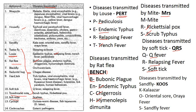Diseases transmitted by sandfly are remembered with KOOS: K = Kala-azar, O = Oriental sore, O = Oroya fever, S = Sandfly fever. For the tsetse fly (CC fly), the 'C' stands for sleeping — it transmits sleeping sickness. Black fly transmits onchocerciasis, and the reduviid bug transmits Chagas disease — these are unique and easier to remember independently.